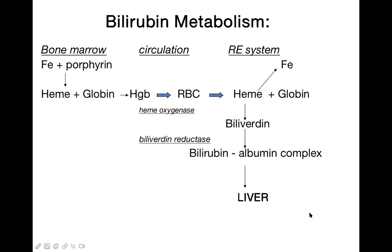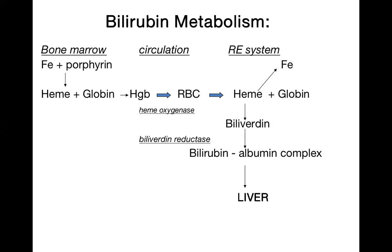Regarding bilirubin metabolism: the source of bilirubin is the RBC. When RBC is broken down, specifically when hemoglobin is broken, heme is metabolized — one metabolite is biliverdin, and from biliverdin, with the help of the enzyme biliverdin reductase, bilirubin is formed. This bilirubin then binds with albumin and travels toward the liver.